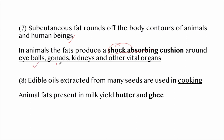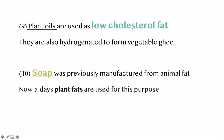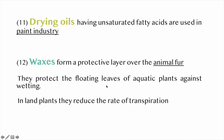Subcutaneous fat rounds off the body contours of animals and human beings; in animals fats produce a shock-absorbing cushion around the eyeball, gonads, kidneys, and other vital organs. Edible oils used for cooking and animal fats are present in milk, butter, and ghee. Plant oils are used as low-cholesterol fats good for health, but are also hydrogenated to form vegetable ghee which is not healthy. Soaps were previously manufactured from animal fat; nowadays plant fats are used. Drying oils having unsaturated fatty acids are used in the paint industry.